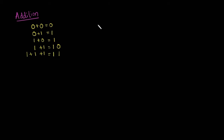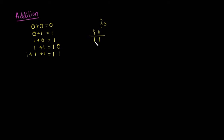How do we get the value 1 plus 1 plus 1? First we add the two 1s: 1 plus 1 is 0, and we carry a 1 to the next position to the left. This 0 is added with 1: 0 plus 1 is 1. So we get 1 and carry a 1 forward.